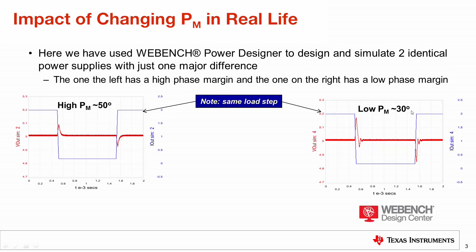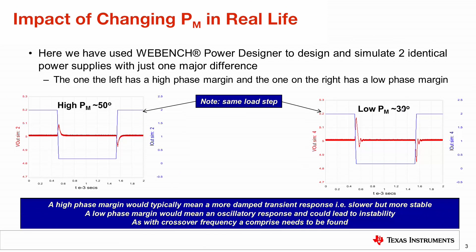Of course, if I make this 30 degrees even lower — if I design for 15 degrees — the power supply in all likelihood under some conditions would become unstable. To conclude: a higher phase margin would typically mean a more damped transient response, i.e., a slower but more stable system, and a low phase margin would mean an oscillatory response and could lead to instability.